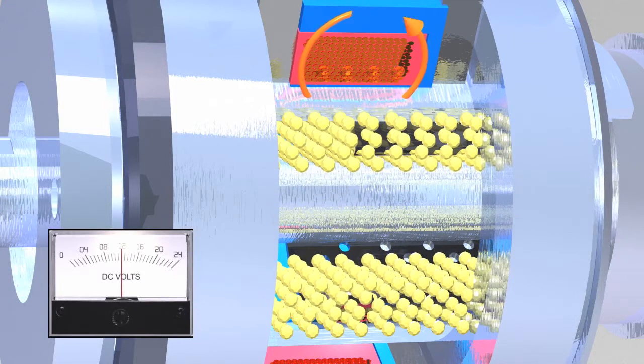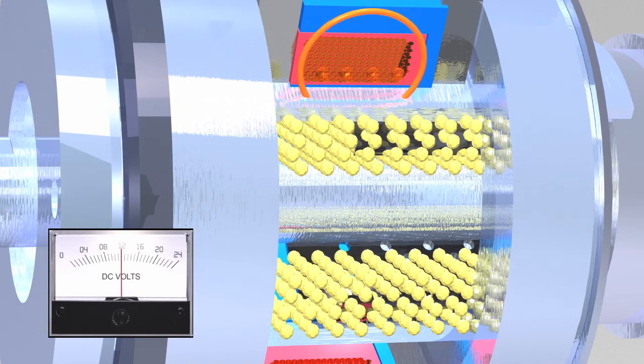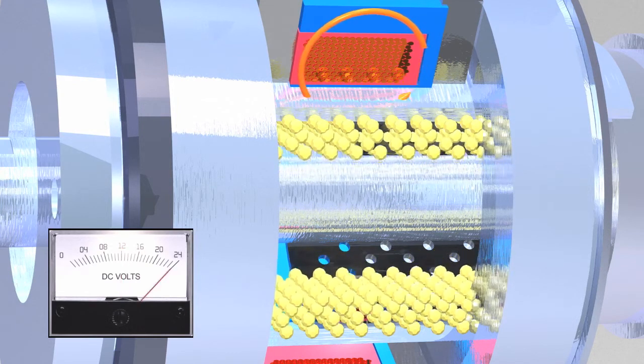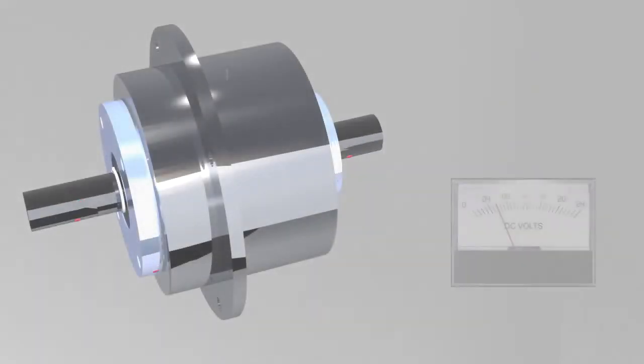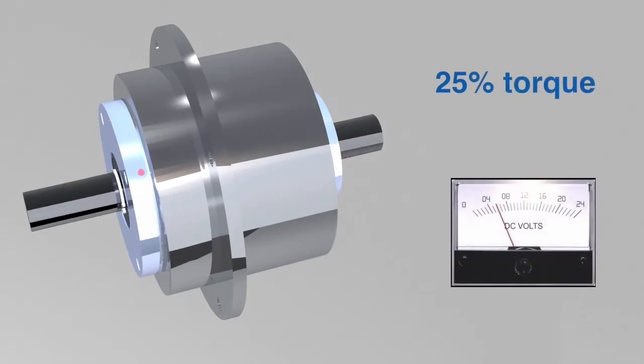The clutch rotor cage passes through the bound particles causing drag between the input and the output. Depending upon the output torque required, the output and input can achieve a 100% lockup so there is no slippage. Torque can be easily controlled by the current.